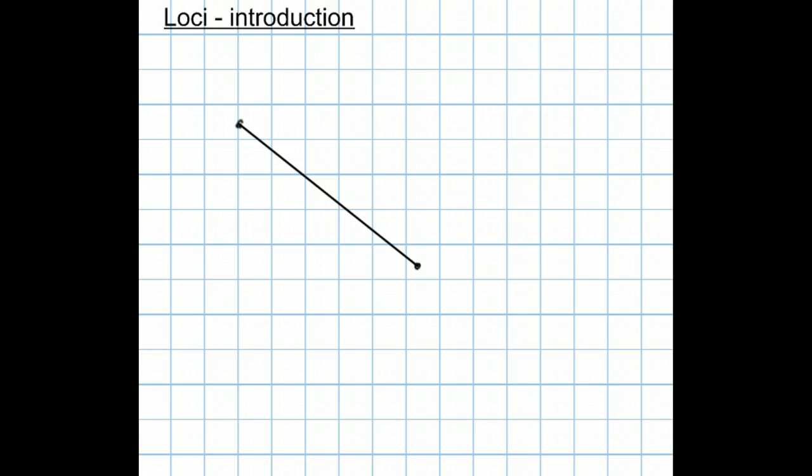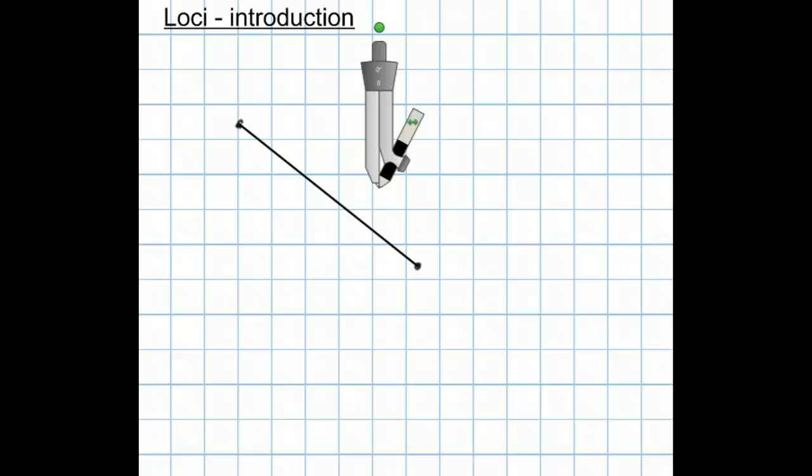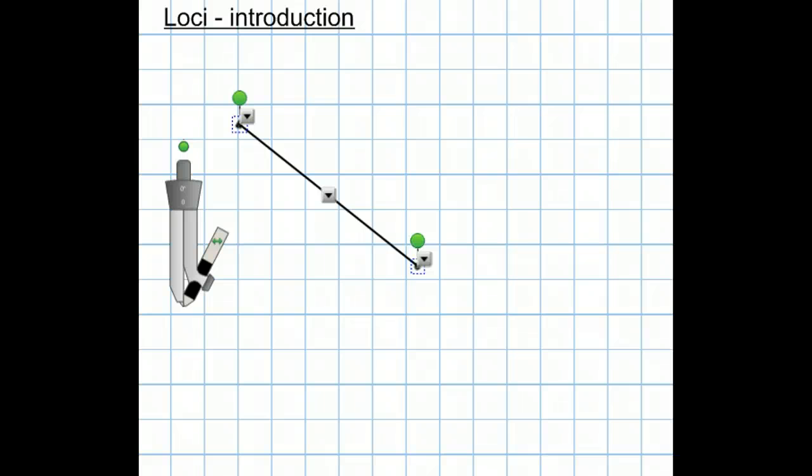The first one we're going to do is we're going to bisect this line segment. And to do that we're going to use only a compass. And the way we do it is so... Let's just move this line segment down a bit so you can see.